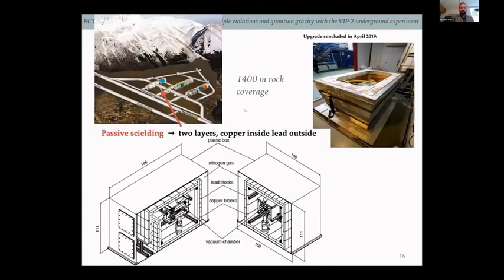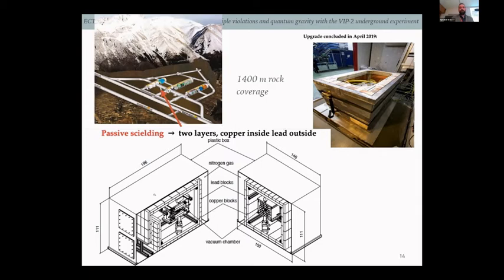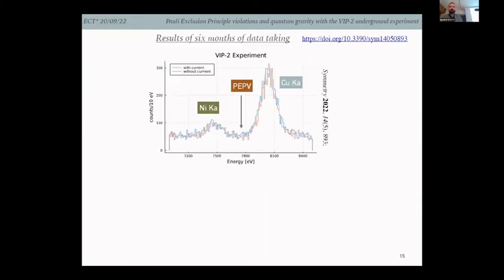The experiment is located at the Gran Sasso National Laboratories. You can see our setup between two halls in the laboratory. Inside, during construction of the shielding, 1400 meters of rock cover the experiment, greatly reducing cosmic radiation. Passive shielding of two layers — copper and lead — was added to protect against environmental radiation.